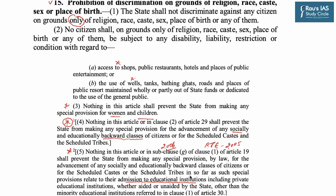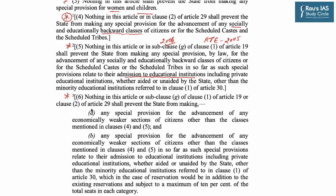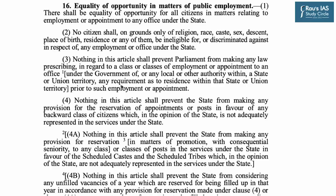The news we have taken relates to Article 15(6), added through the 103rd Constitutional Amendment Act in 2019, which talks about the advancement of any economically weaker section of citizens other than the classes mentioned in clauses 4 and 5 — that is, socially and educationally backward classes. This amendment added a new category: Economically Weaker Sections (EWS).